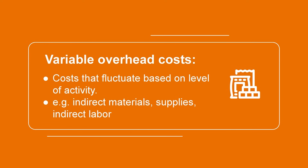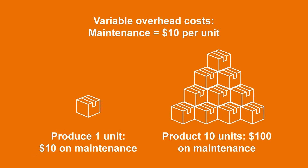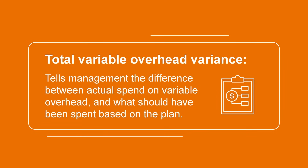Generally speaking, total variable overhead costs will increase when the activity level increases and decrease when the activity level decreases. Common examples of variable overhead costs include indirect materials, supplies, and indirect labor. For example, let's say a company spends $10 per unit of production on maintenance. If they produce one unit, they'll spend $10 on maintenance. However, if they produce 10 units, they'll spend $100 on maintenance. In order to manage these overhead costs effectively, companies will use variance analysis as a tool.